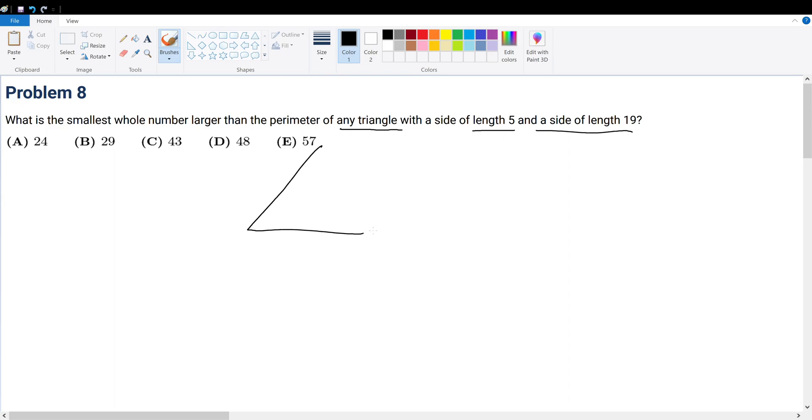So let's draw the triangle. We have a triangle right here. Side length of 5, side length of 19. What is the smallest whole number larger than the perimeter of any triangle with these side lengths?